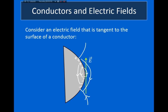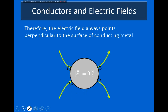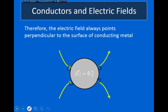The electric field will end on the negative charges, and electric fields will emanate from the positive charges. The charges on the surface will always distribute themselves so that the electric field lines touch the surface perpendicular to the surface. The reason this happens is that if there was any component of the electric field tangent to the surface, the electrons would move along the surface in response to that component and eventually cancel it out. So as a result, the electric field lines are always perpendicular to the surface of the conductor.